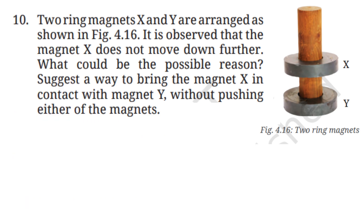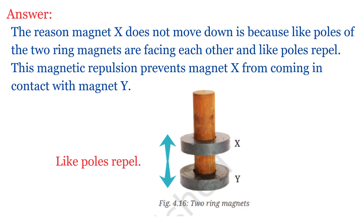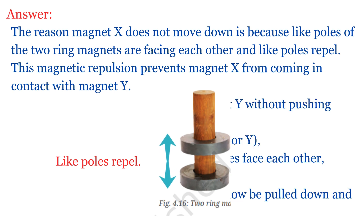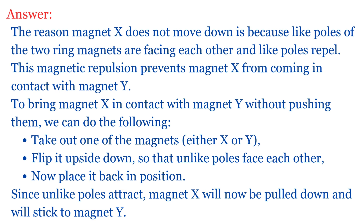Question 10: Two ring magnets X and Y are arranged on a rod, and magnet X does not move down further. This is because like poles of the two ring magnets are facing each other, and like poles repel, preventing X from coming in contact with Y. To bring X in contact with Y without pushing, take out one magnet, flip it upside down so unlike poles face each other, and place it back. Since unlike poles attract, magnet X will now be pulled down and stick to Y.